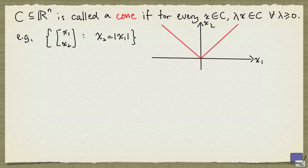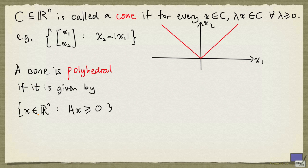In the context of what we have been doing, we'll be interested in a special family of cones called polyhedral cones. We say that a cone is polyhedral if it is given by the set of x in R^n such that Ax ≥ 0 for some n by n matrix A.